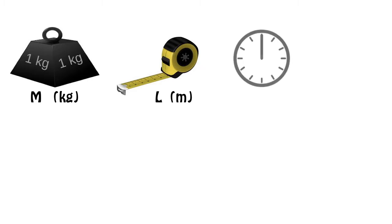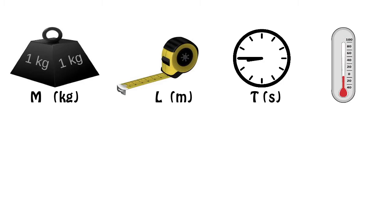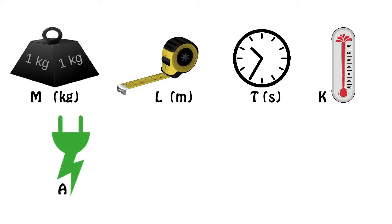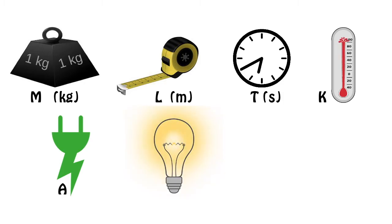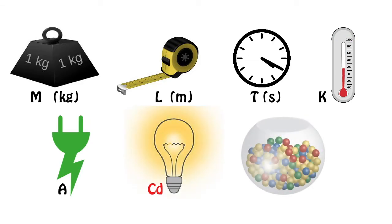For that you need to understand the basic seven fundamental quantities and their representations in dimensional analysis. We will be representing mass as M (unit: kilogram), length as capital L (unit: meter), time as T (unit: second), thermodynamic temperature as K (unit: Kelvin), electric current as A (unit: ampere), luminous intensity as candela, and amount of substance as mole.